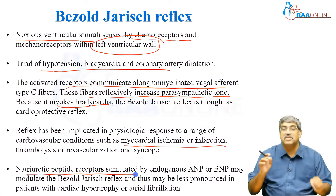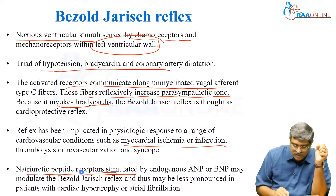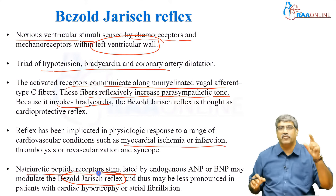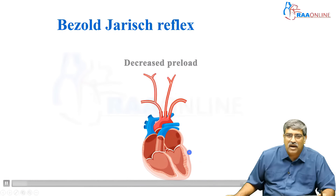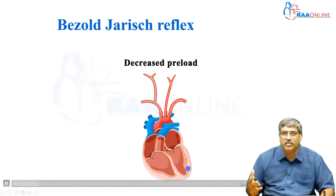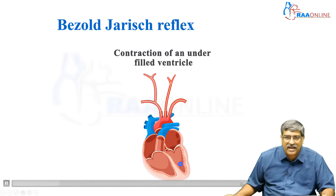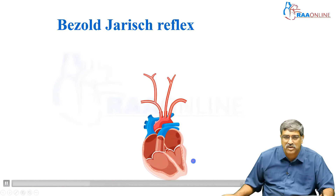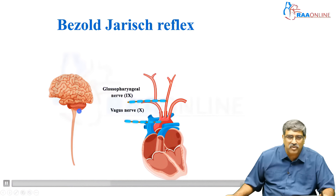Natriuretic peptide receptors stimulated by endogenous ANP and BNP may modulate the reflex, and thus it may be less pronounced in patients with cardiac hypertrophy or atrial fibrillation. As shown here, with an underfilled ventricle or when an event such as MI occurs, the receptors in the left ventricle get activated. This contraction causes the mechanoreceptors or chemoreceptors located in the left ventricle to send the signal to the medulla.